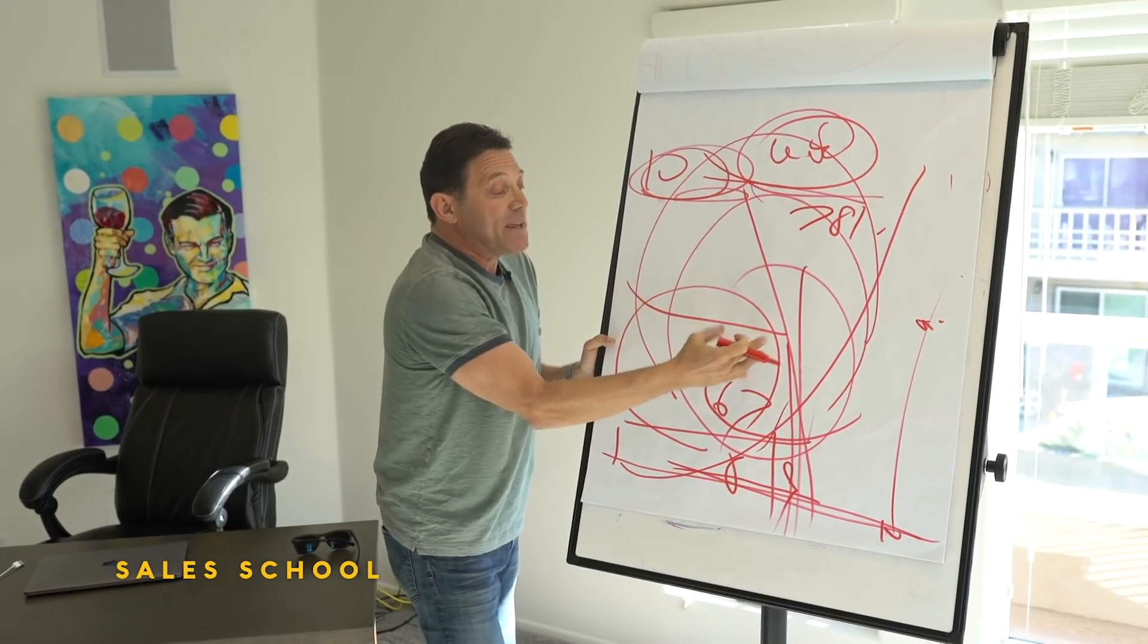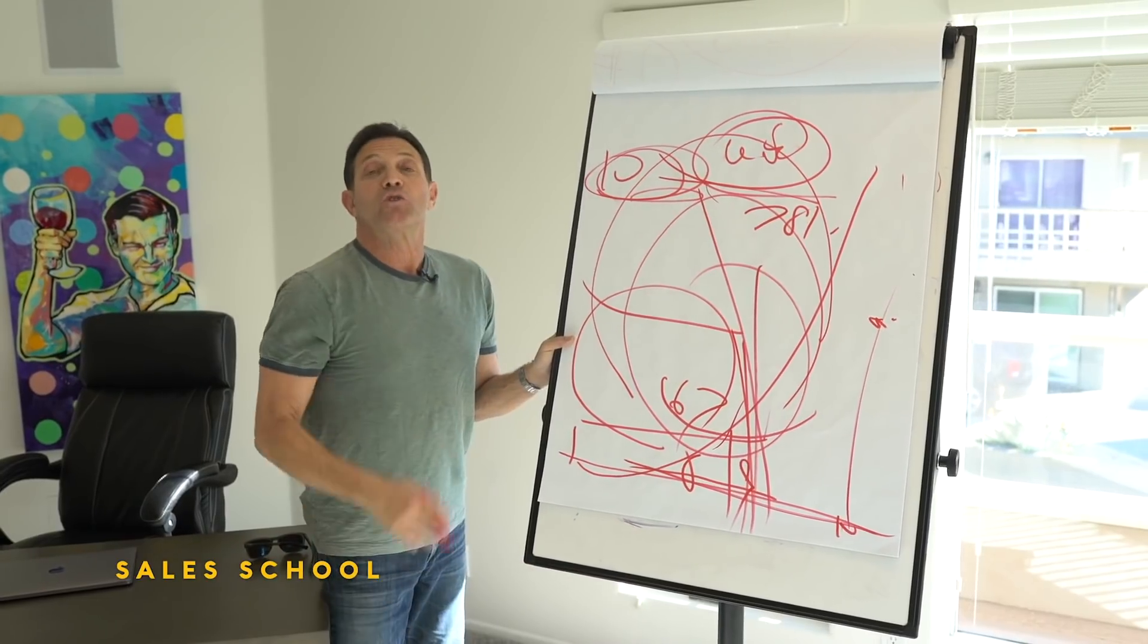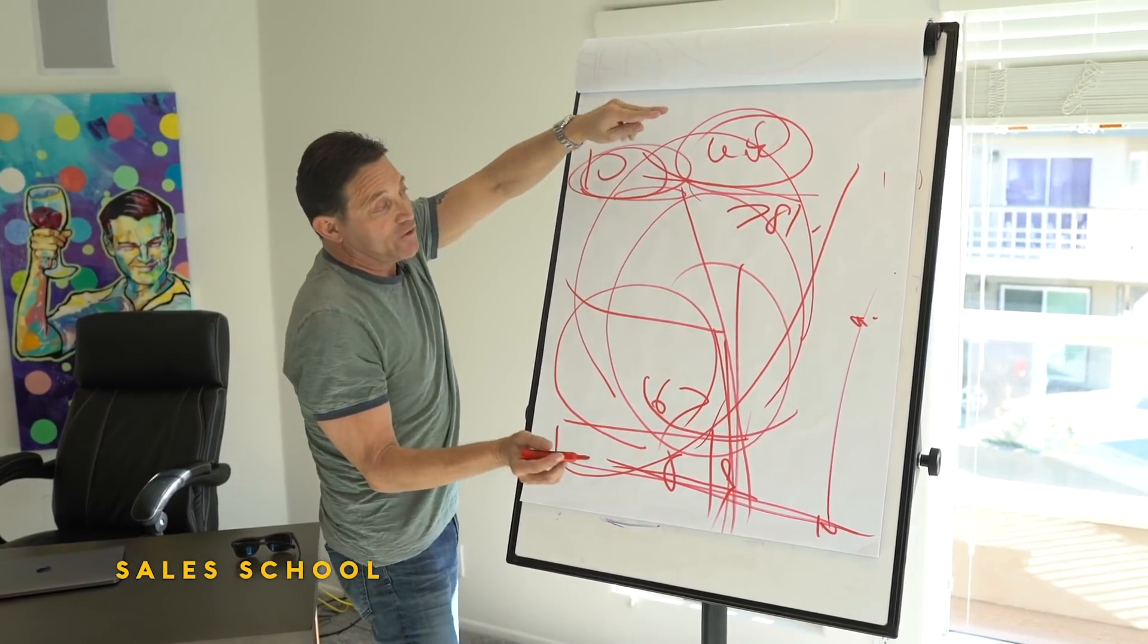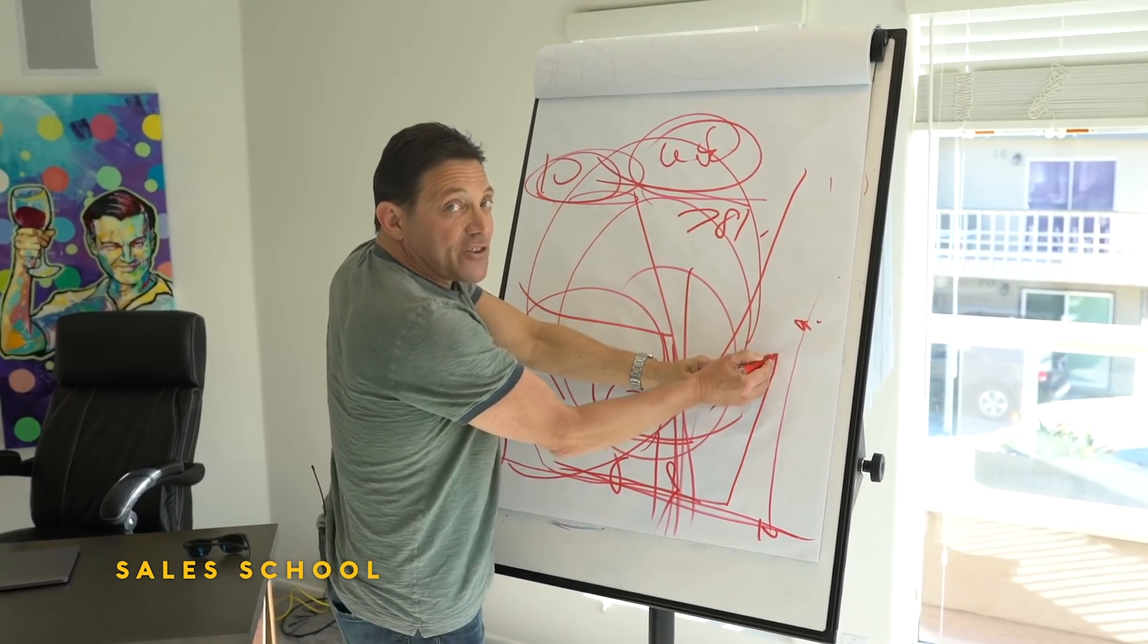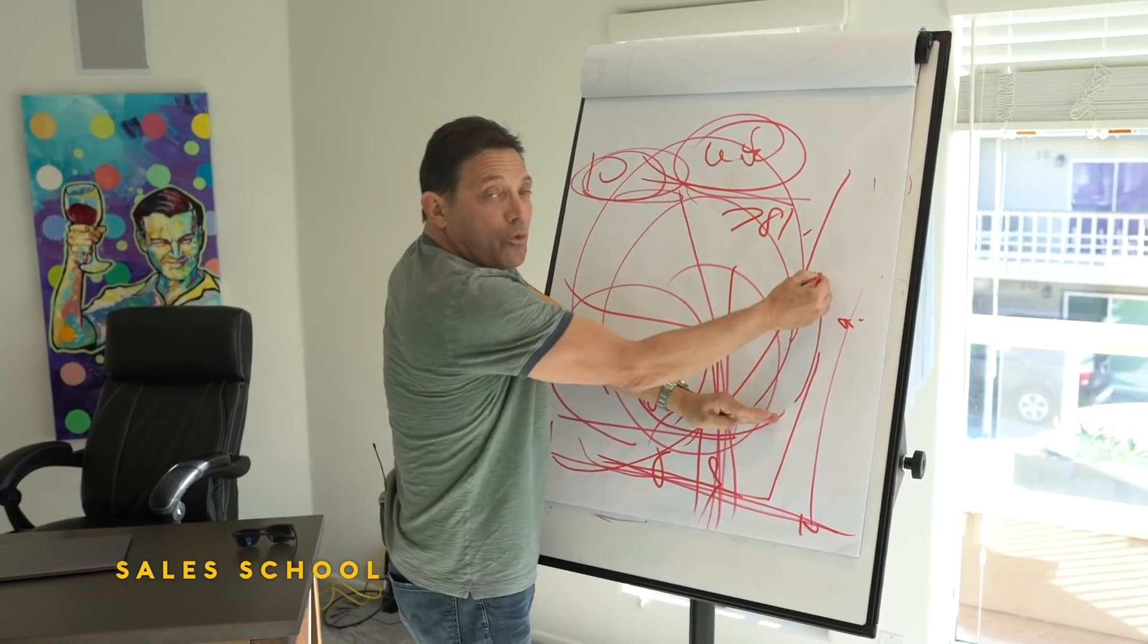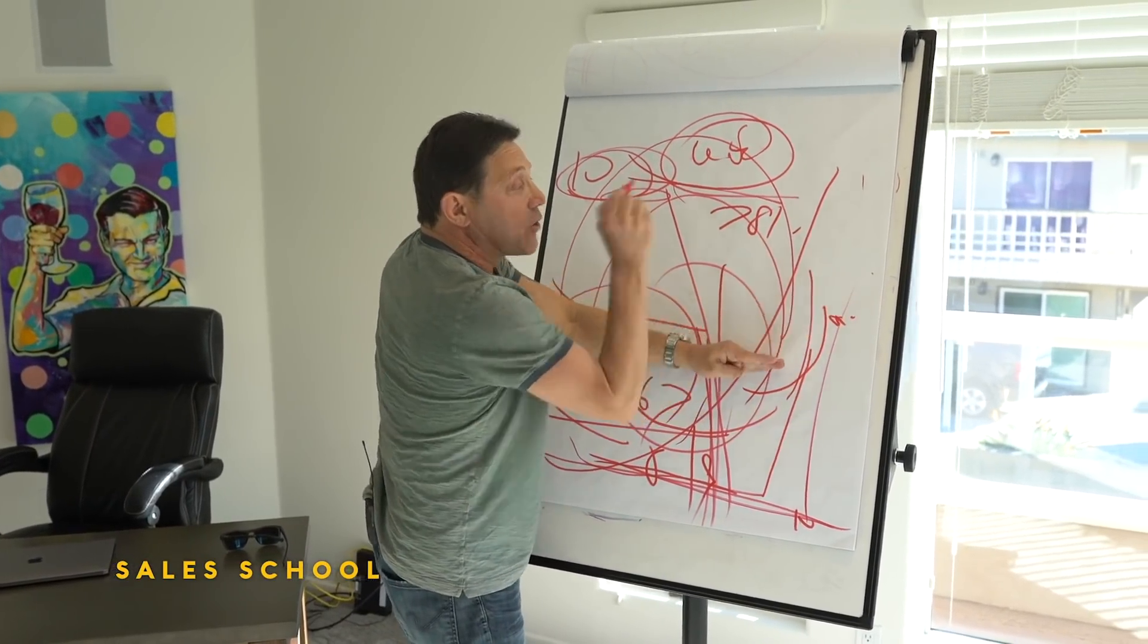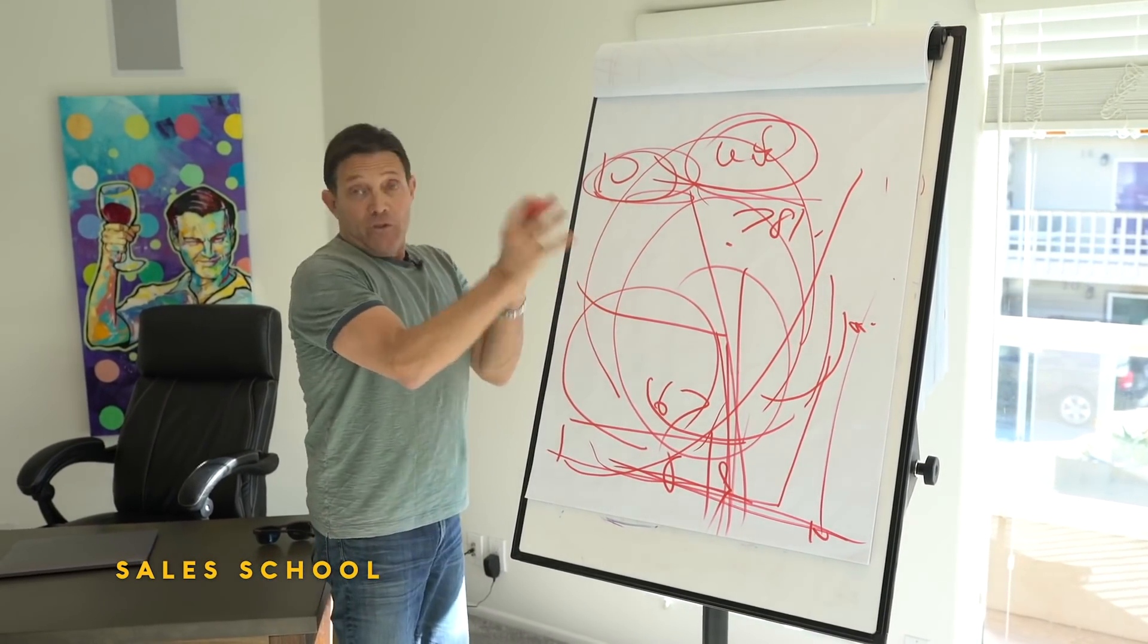You answer the objection, then you loop back again and you resell the product again, you resell yourself again with more emotion this time—future pacing—resell the company, and now you can lower the action threshold using that pattern. Now what you're doing is you're attacking it from two levels: you're raising up their level of certainty and you're lowering their action threshold. When it happens to cross over where you've lowered their action threshold enough so that their level of certainty is higher, that's when they buy.